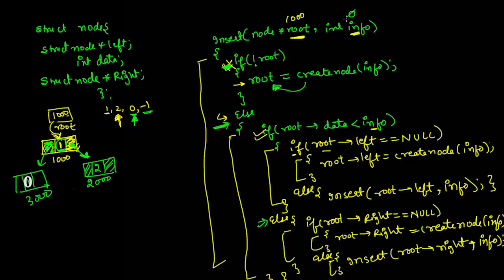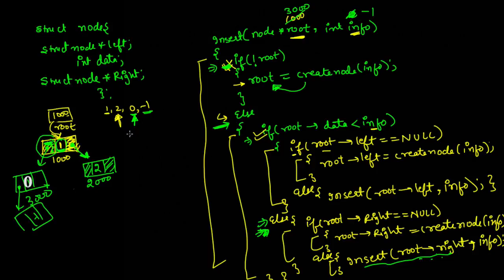Since root data 1 is greater than 0, we go to the else branch for left. The left part is null, so we create a node at address 3000 and assign it to root->left. Now inserting -1: we pass 1000 and info=-1. Root data 1 is greater than -1, and left is not null (it points to 3000), so we recursively call insert with 3000 and -1, adding -1 as the left child of that node.